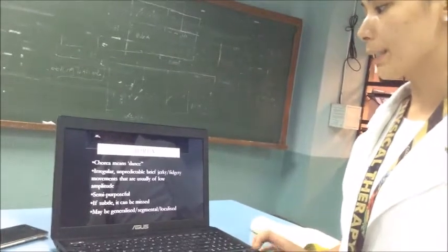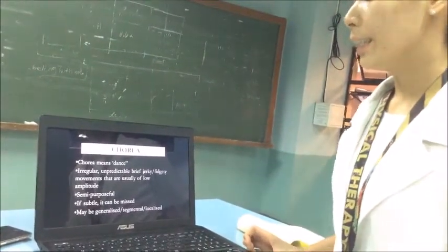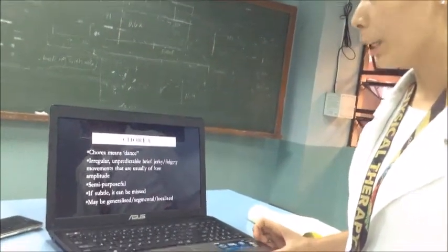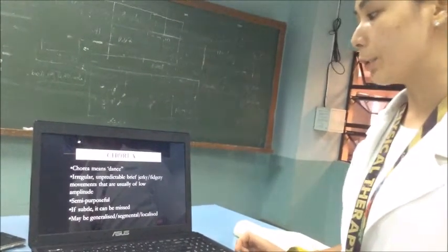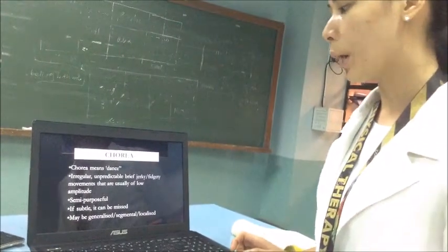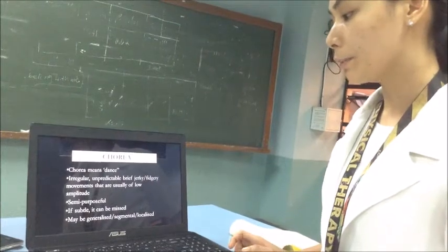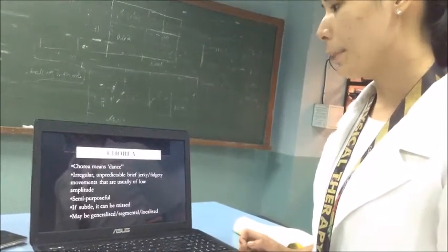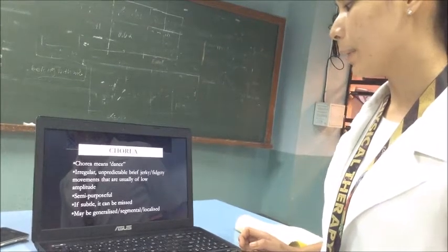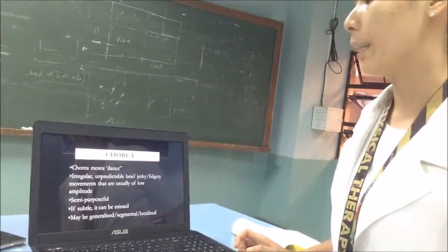First, we are going to discuss chorea. Chorea means dance. It is the irregular, unpredictable, brief, jerky, fidgety movement that are usually of low amplitude. Semi-purposeful — if subtle, it can be missed. It may be generalized, segmental, or localized.